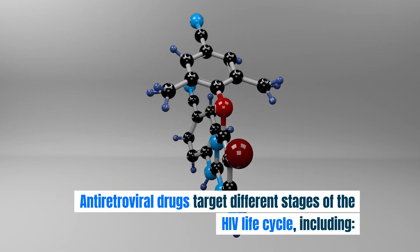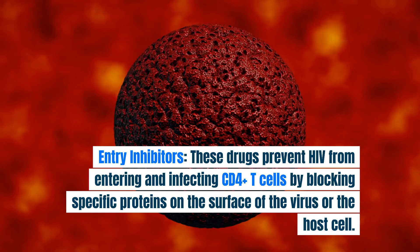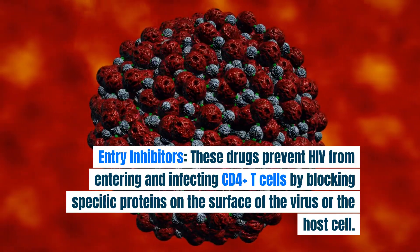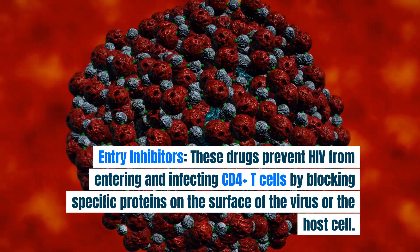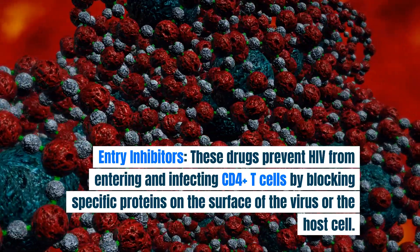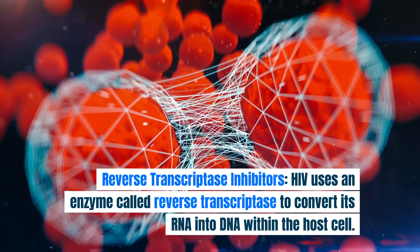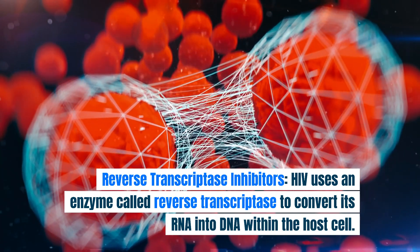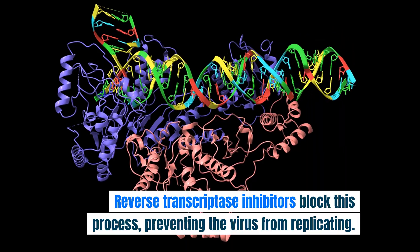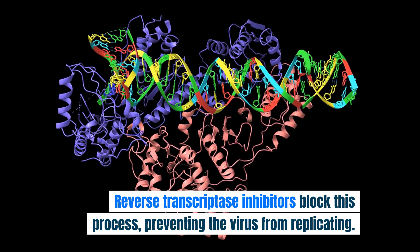Antiretroviral drugs target different stages of the HIV life cycle, including entry inhibitors, which prevent HIV from entering and infecting CD4+ T cells by blocking specific proteins on the surface of the virus or the host cell, and reverse transcriptase inhibitors, which block the enzyme reverse transcriptase that HIV uses to convert its RNA into DNA within the host cell, preventing the virus from replicating.